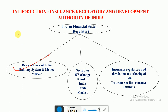RBI is responsible for framing monetary and fiscal policy. From time to time it decides the bank rate, repo rate, and interest rates which must prevail in the market. RBI is the sole regulator of the commercial banking system — it is the bankers' bank and also the banker to the government.